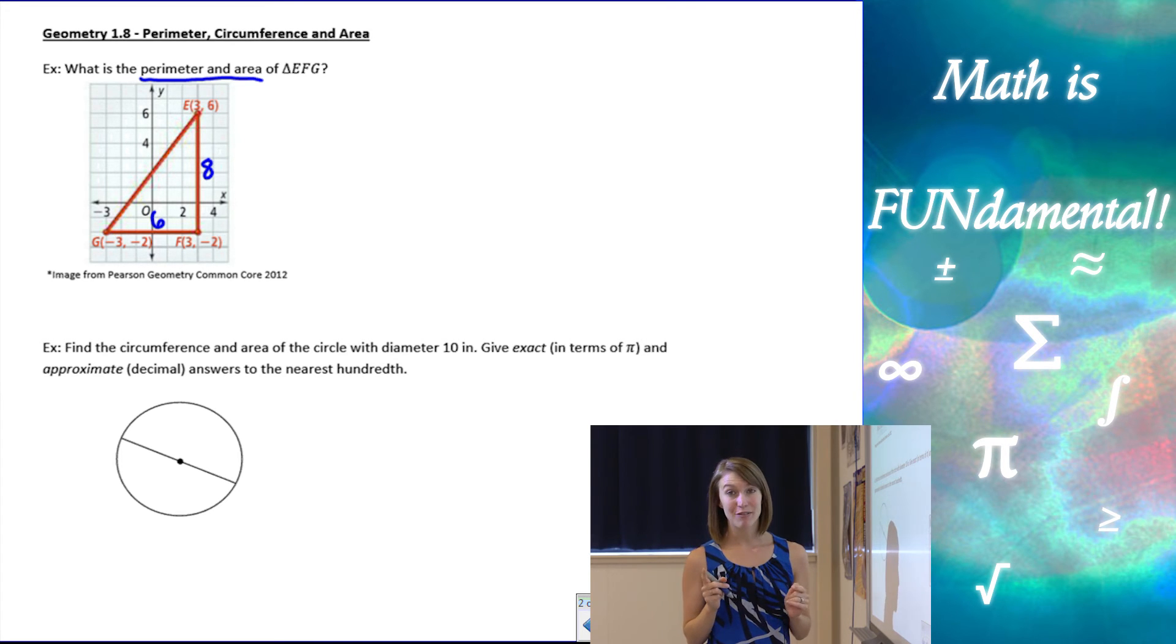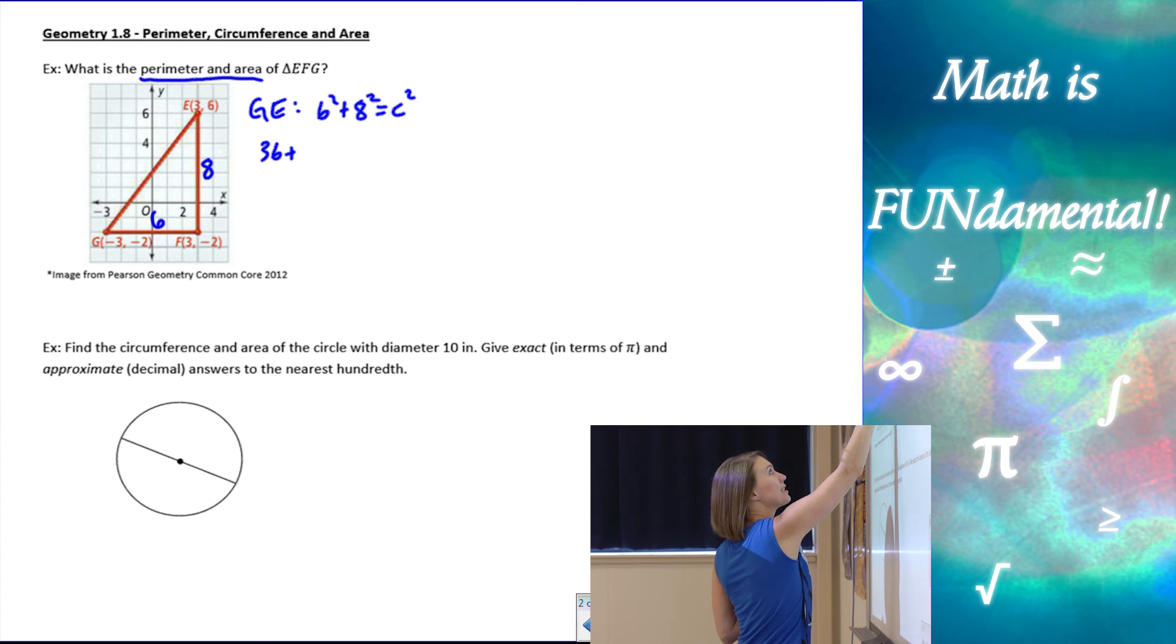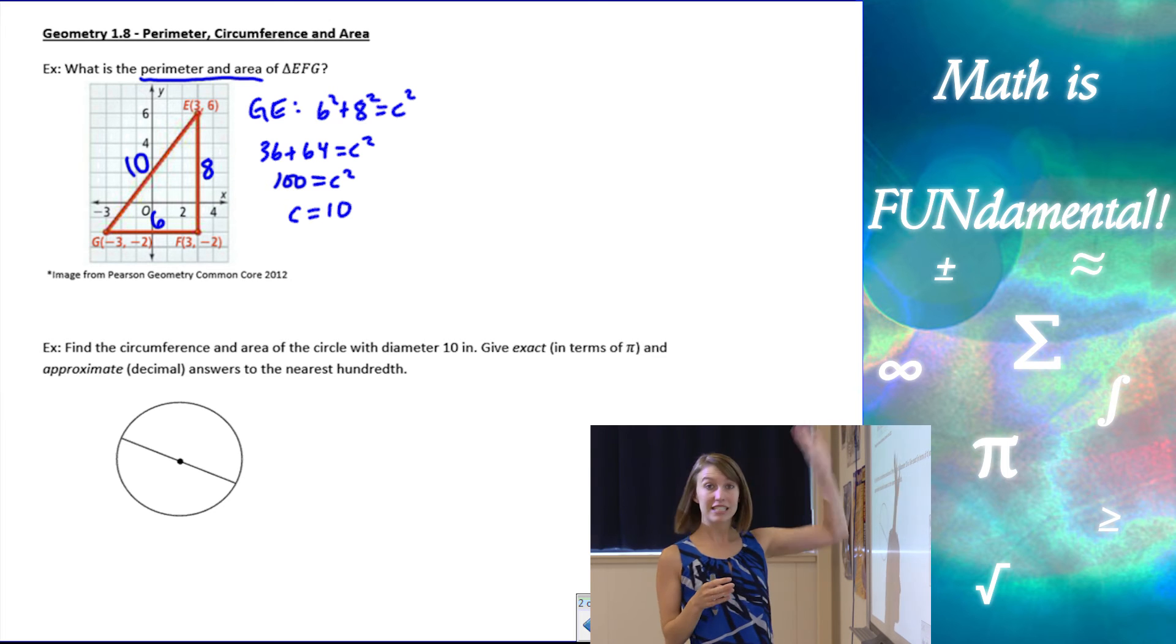Now, diagonally, remember from our last lesson, we have to find that length either using the distance formula or Pythagorean theorem. I'm partial to Pythagorean theorem, so I'm going to use that one. So to find the length of GE, I have 6 squared plus 8 squared equals C squared. 36 plus 64 is C squared. That gives me 100, which is nice. So I know that that length is 10 units.